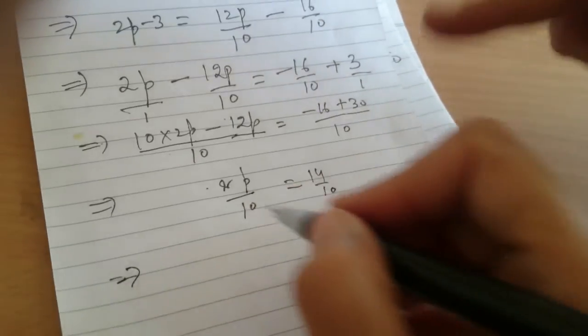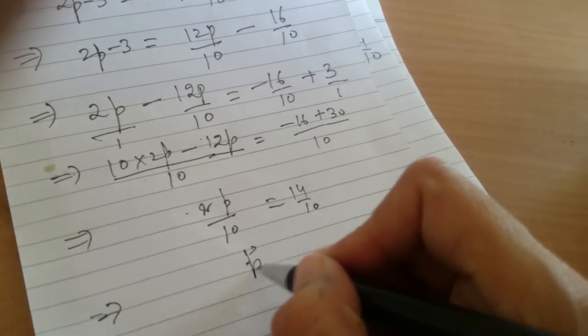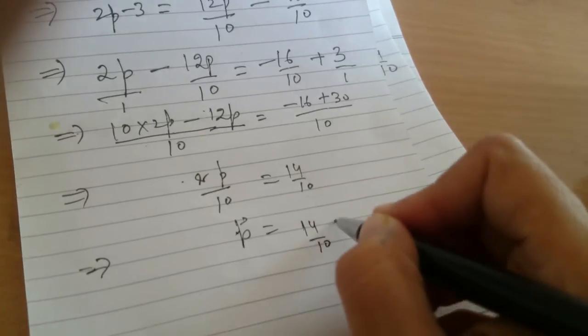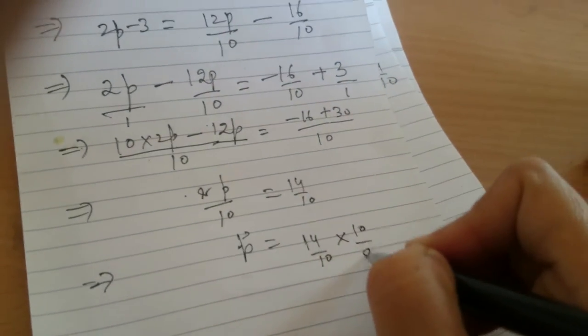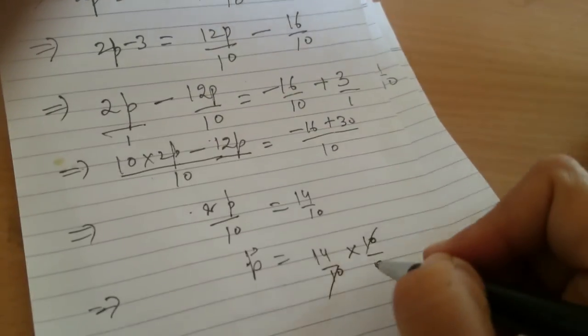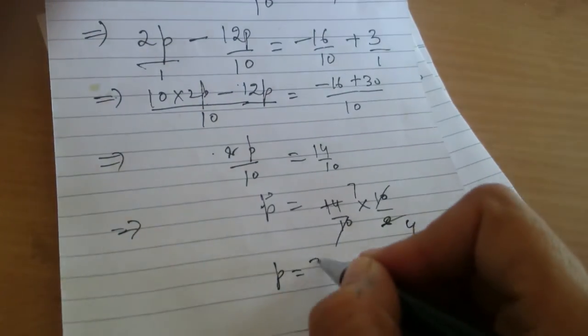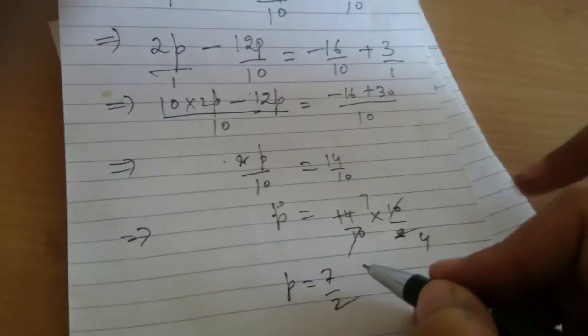This implies, when we will, p will be equal to, we will take this, 14 by 10 into 10 by 8. So these are cancelled, and here we will get 4 and 7. So what is the answer? P is equal to 7 upon 4, 7 by 4.